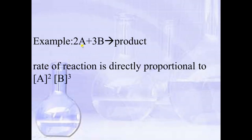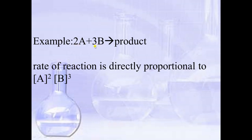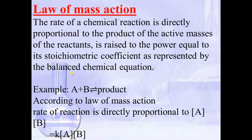For example, for the equation 2A + 3B → product, the rate of reaction is: rate = K·[A]²·[B]³, where 2 and 3 are the stoichiometric coefficients written as powers. The law of mass action states: the rate of a chemical reaction is directly proportional to the product of the active masses of the reactants, each raised to the power equal to its stoichiometric coefficient as represented by the balanced chemical equation.